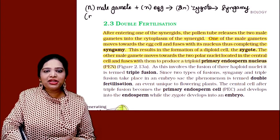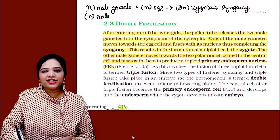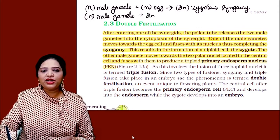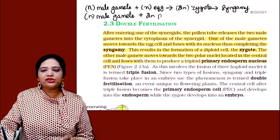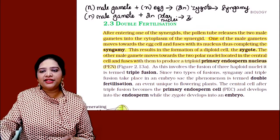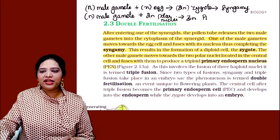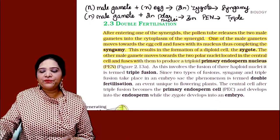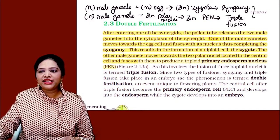The second male gamete fuses with the two polar nuclei, which are already 2N, and they become 3N. This is called the primary endosperm nucleus. This process is what we call triple fusion. So triple fusion and syngamy are the two events in double fertilization.